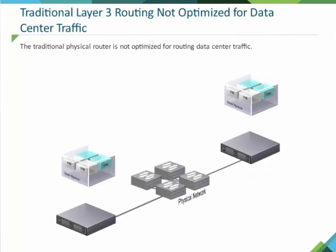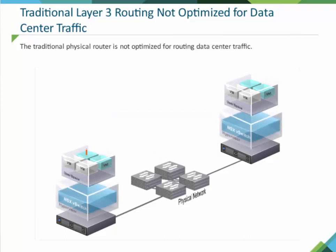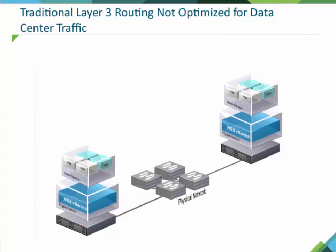The traditional physical router is not optimized for routing data center traffic. For example, traffic between two virtual machines on the same host but different subnets must be routed outside the host. In a data center, traffic may be between two virtual machines on the same host but in different IP subnets and on different logical switches.